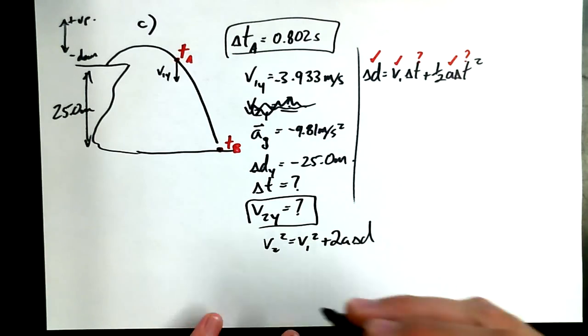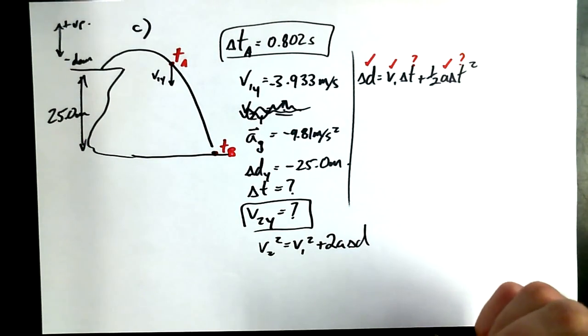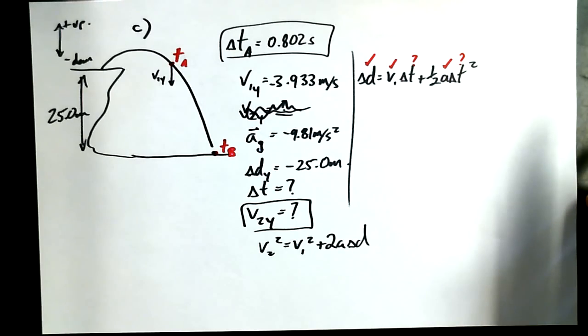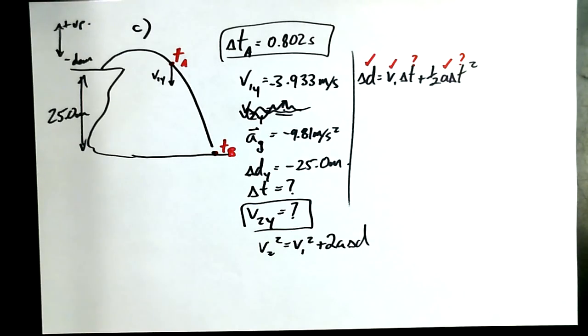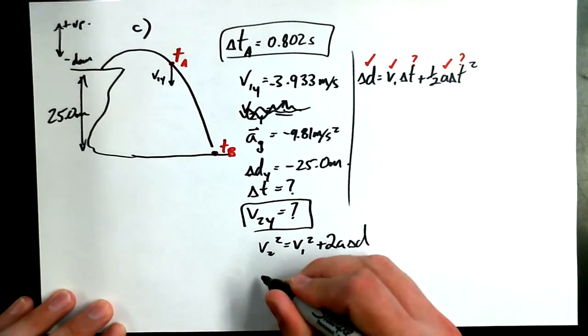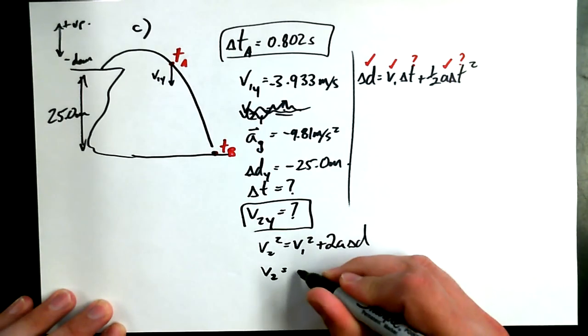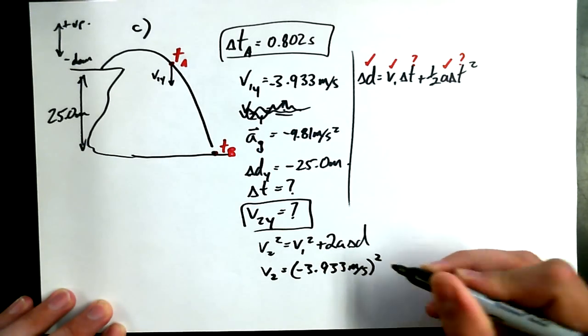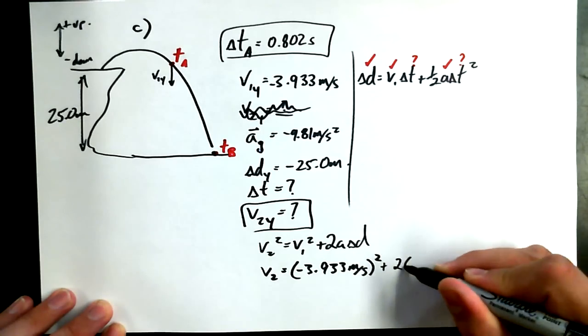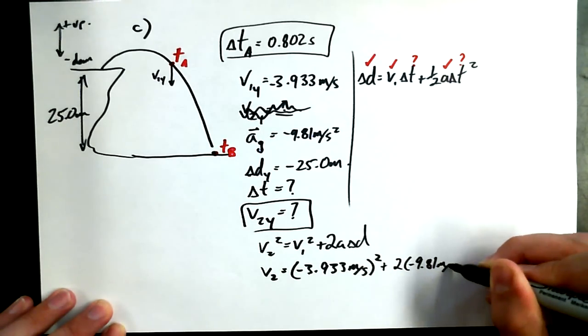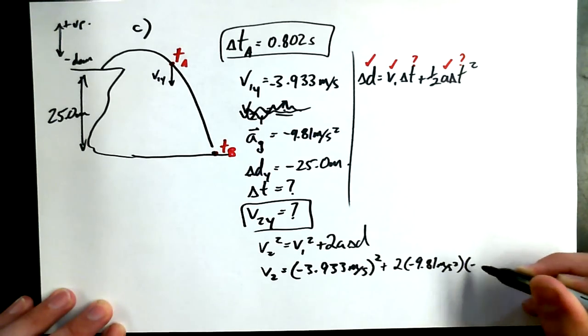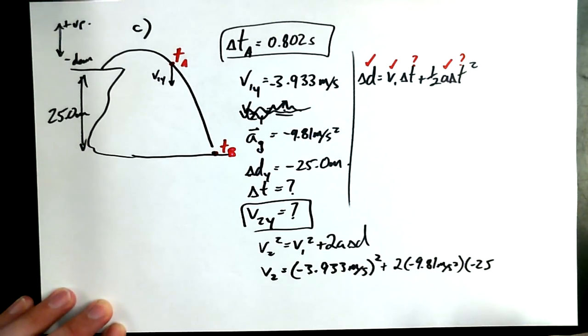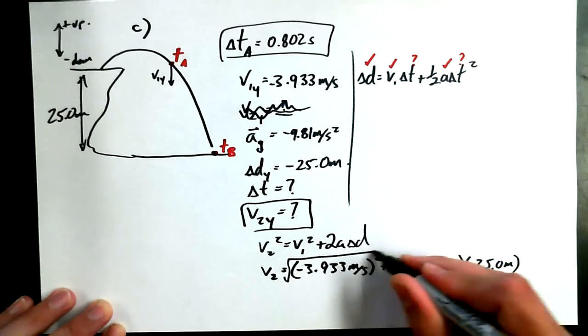So, I know acceleration. I know displacement. I know V1Y. I think I would probably use V2 squared equals V1 squared plus 2A delta D. Square rooting both sides. Subbing in values. So, V2 is equal to negative 3.933 meters per second. Remember, square the whole darn thing, including the negative sign. Plus 2 times negative 9.81 meters per second squared times delta D, which is negative 25. It's starting to look like maybe I should have called down positive. But, you know, I started off calling down negative in part A, and I didn't want to change.